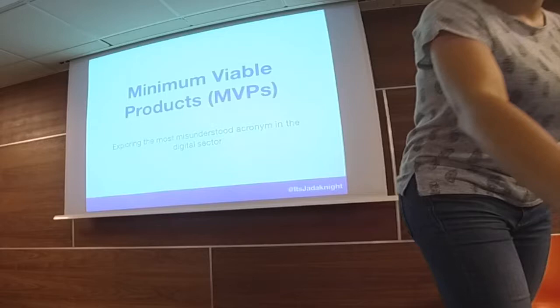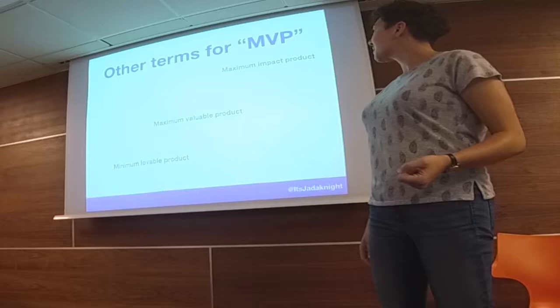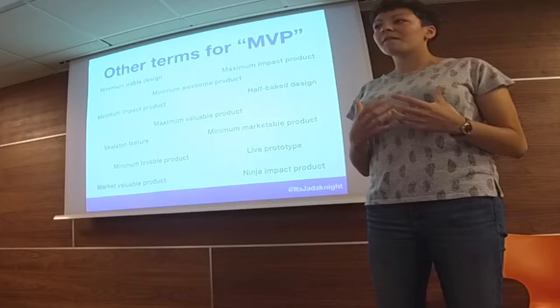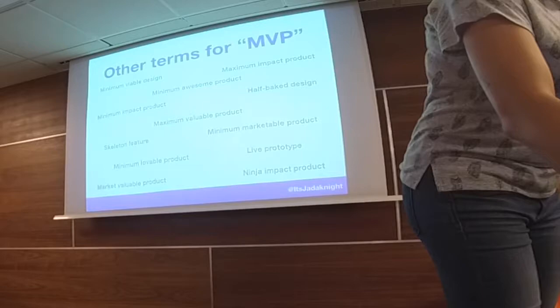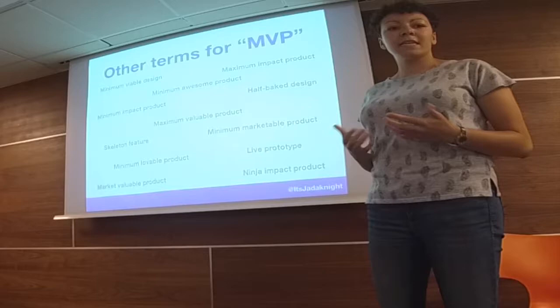The term MVP has been changed a lot over the years. If you Google MVP you might come up with a bunch of results — I've seen 'maximum viable product,' 'minimum maximum impact product,' 'minimum level product.' There are actually about a hundred different terms for MVP out on the internet. This is my favorite: the 'ninja impact product.' I don't actually know what that means.